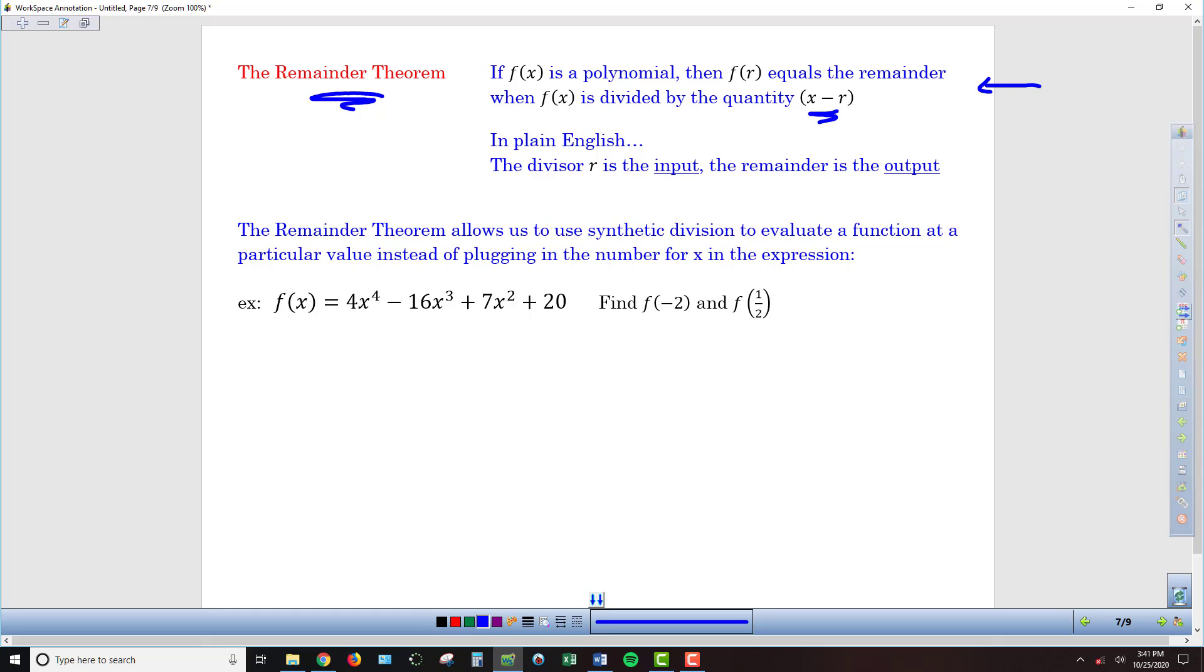So in plain English, to kind of translate that for us, whatever our divisor is, r, think of that as the input, as the number you're plugging into the function, and whatever the remainder is, that's the output.